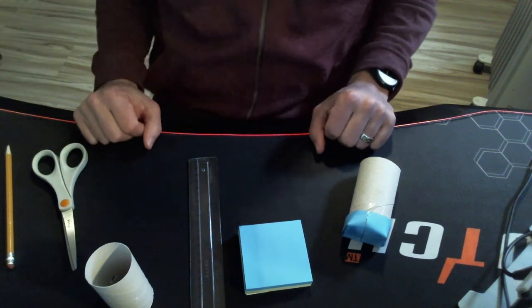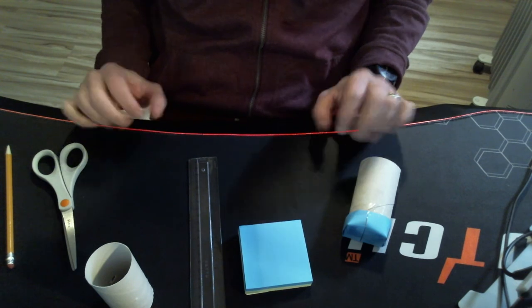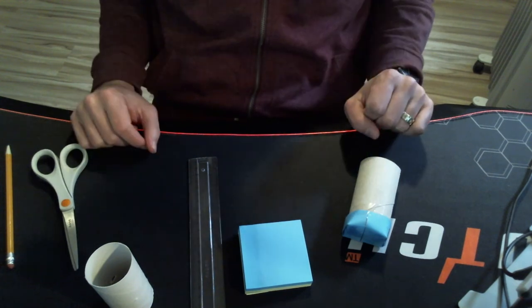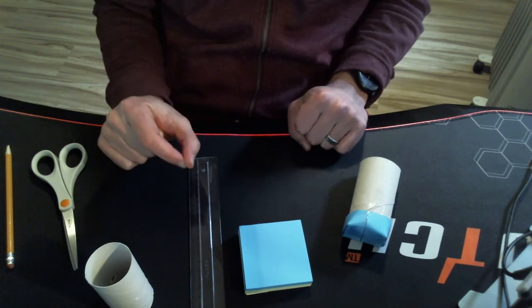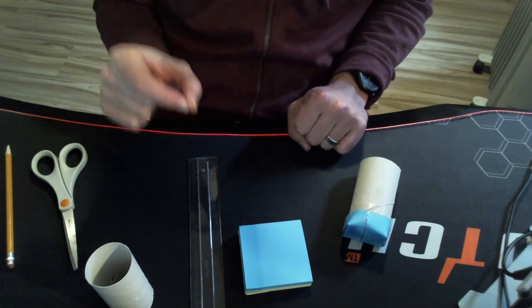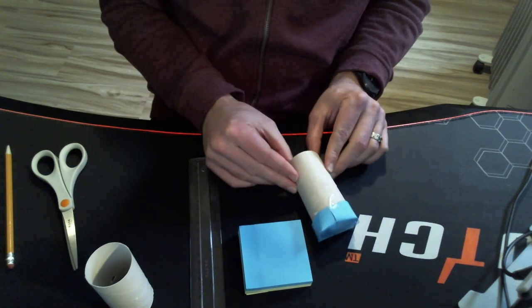All right, we are going to make a ray box today that we can use in our light experiments that we're doing in this unit. What a ray box does is it allows us to get one solid beam of light. Actually, today we're going to make one that makes three beams of light from a flashlight or a cell phone with a light or whatever.